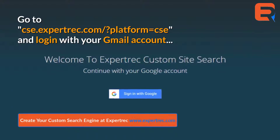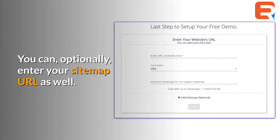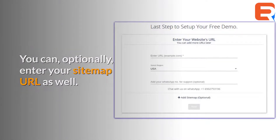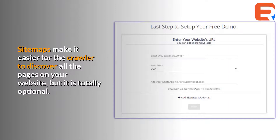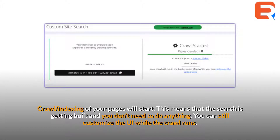Go to CSE.expertrec.com/?platform=CSE and log in with your Gmail account. Enter the URL of the website you want to crawl and choose your nearest data center region. You can optionally enter your sitemap URL as well — sitemaps make it easier for the crawler to discover all the pages on your website. Crawl indexing of your pages will start automatically, and you don't need to do anything.